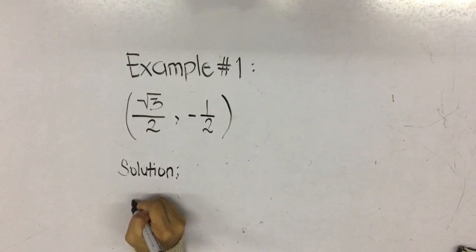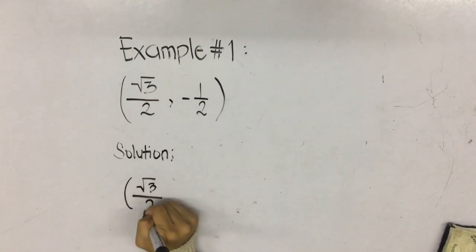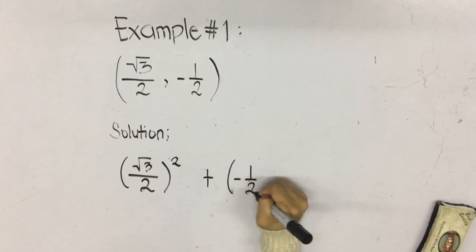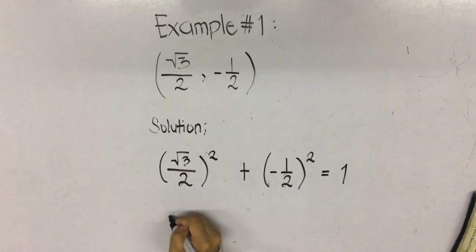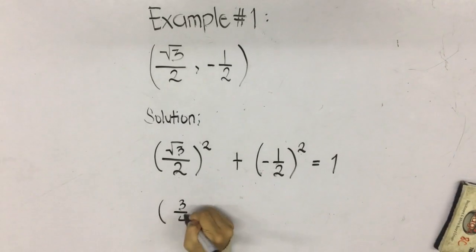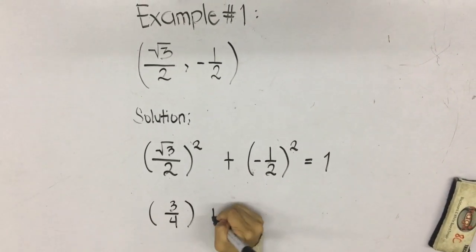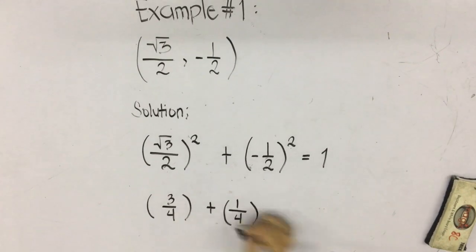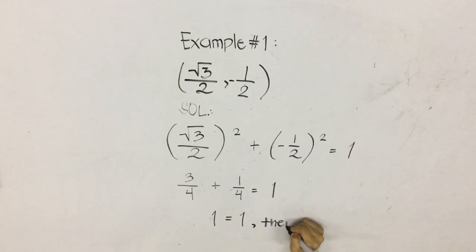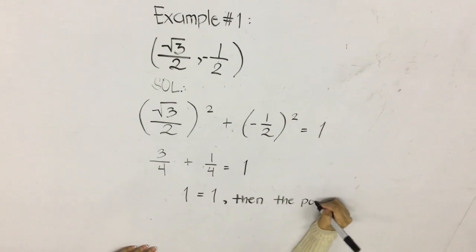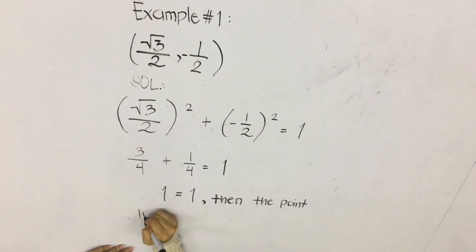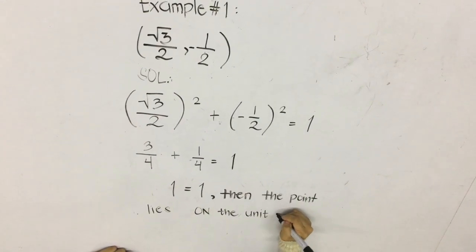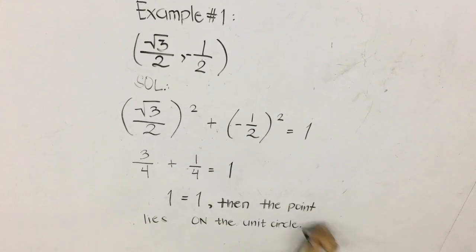Now for our first example: square root of 3 over 2, squared, plus negative 1 half, squared, is equal to 1. As you can see, you have the same denominator, so you just add the numerators, which is 3 plus 1, giving you 4. And 4 over 4 is equal to 1, so 1 equals 1. Therefore, the point lies on the unit circle.